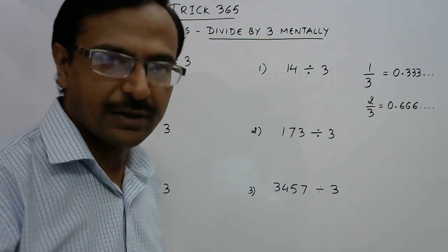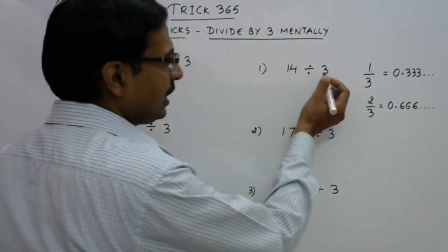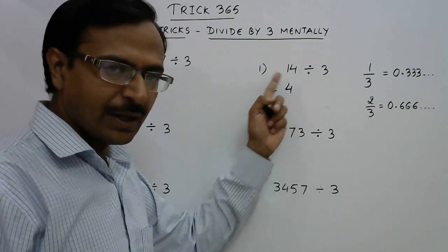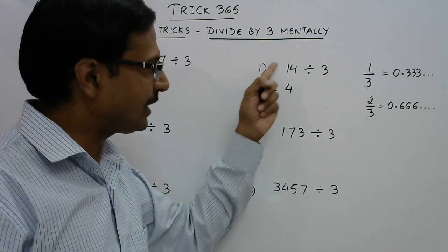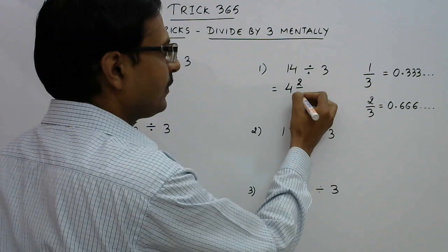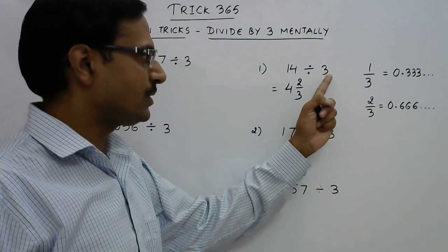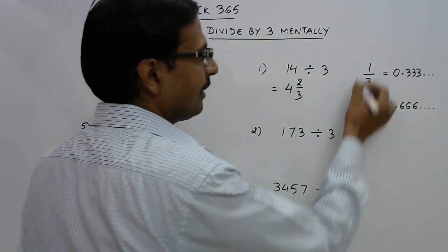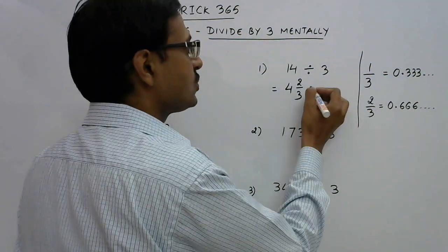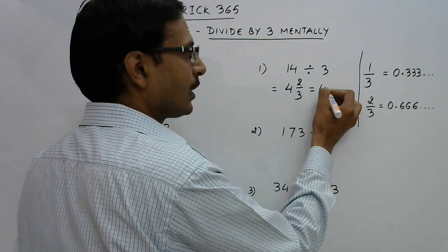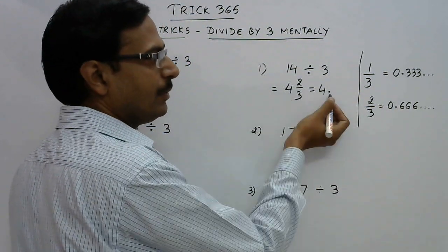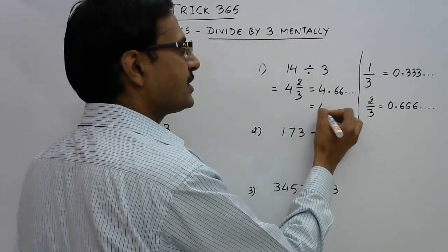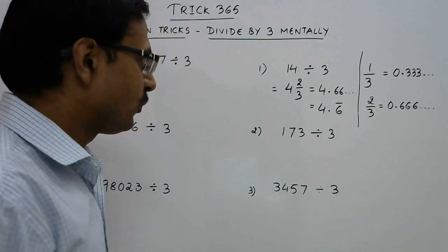Three goes exactly four times to give us twelve — three fours are twelve — and what remains is two, so fourteen minus twelve is two. Just write 2 upon 3, because the divisor is three. Now you know what is the value of 2/3 — it is 0.666. So we put 6, 6, 6 after the decimal place and four will be before the decimal place. So 14 ÷ 3 = 4.6̄.